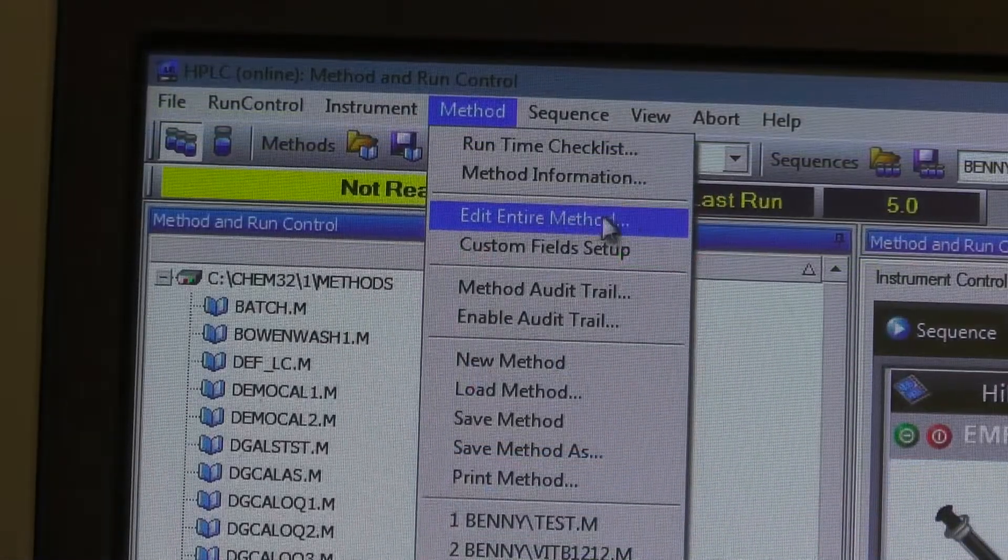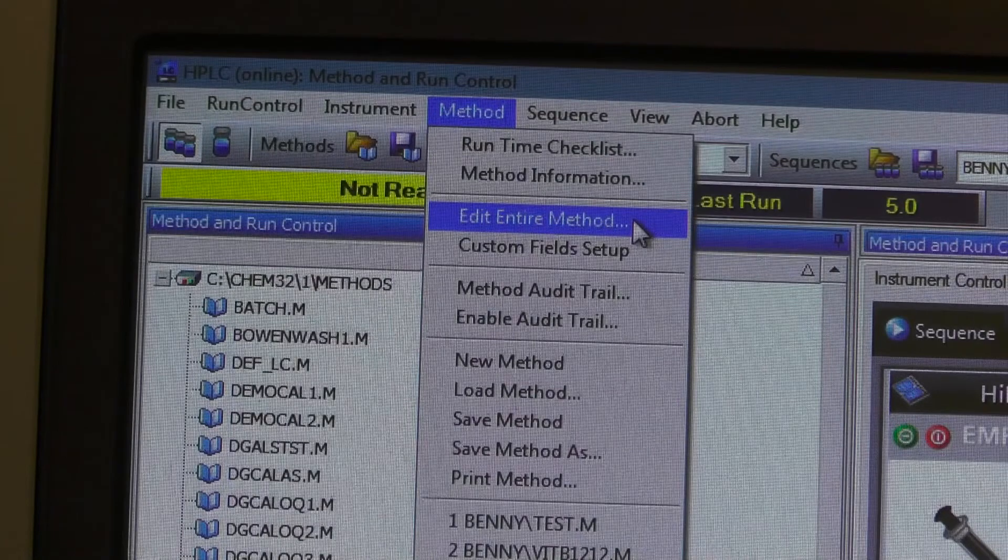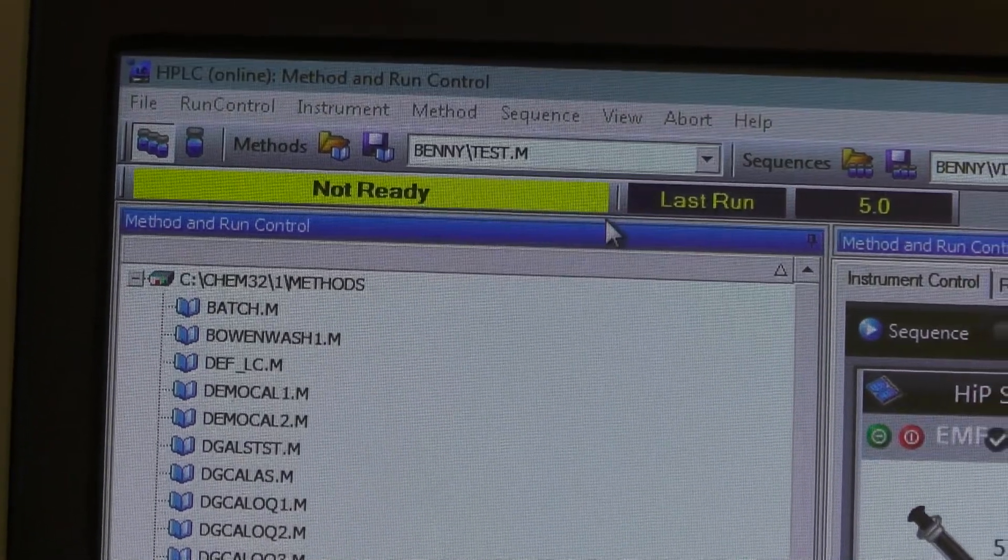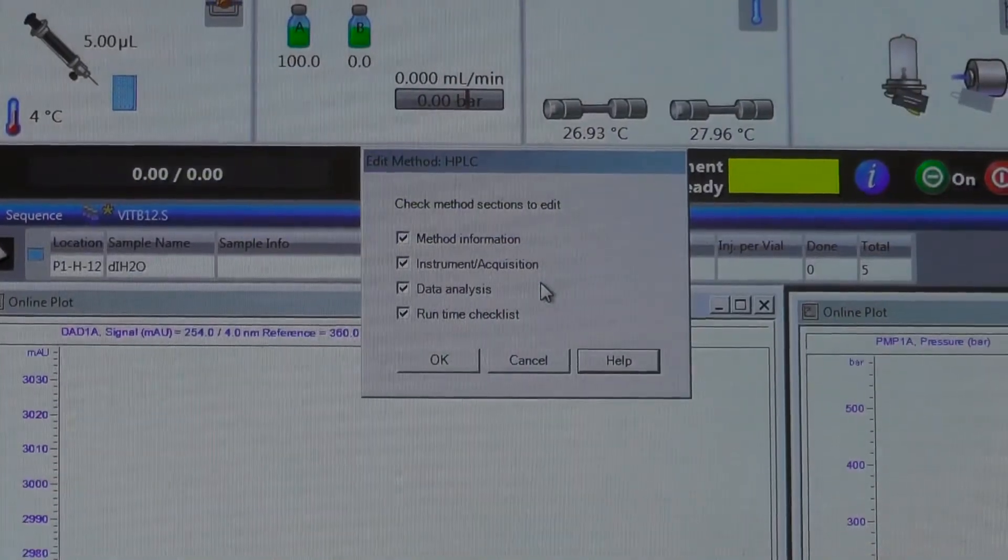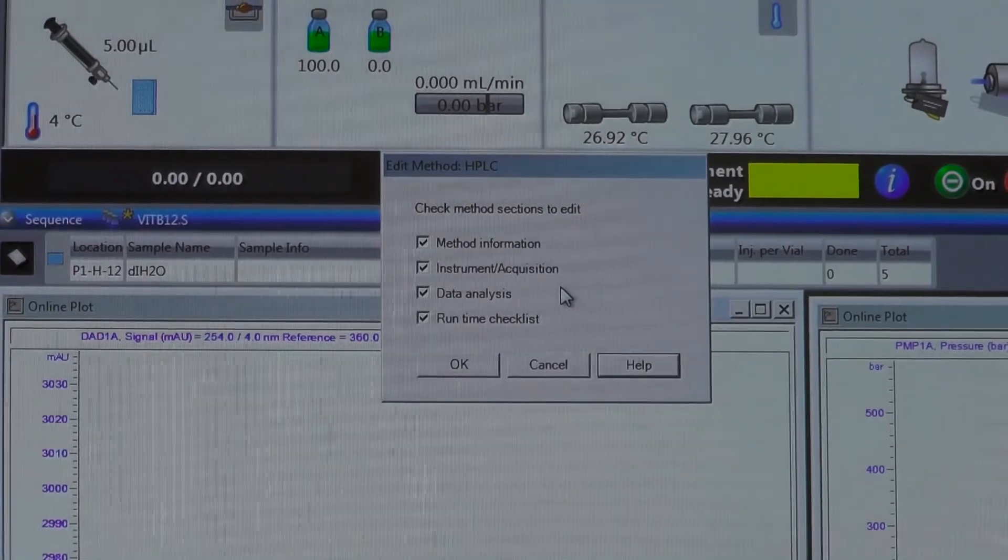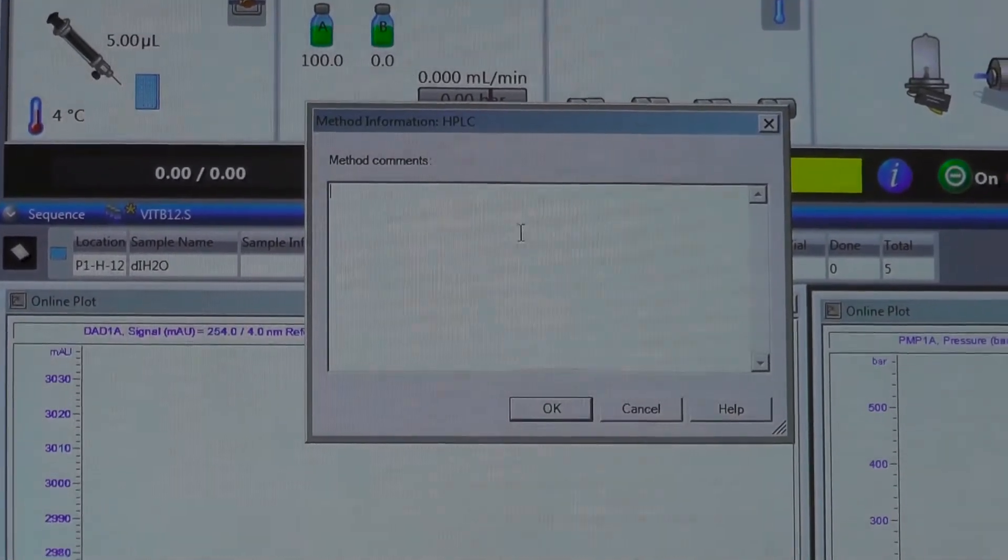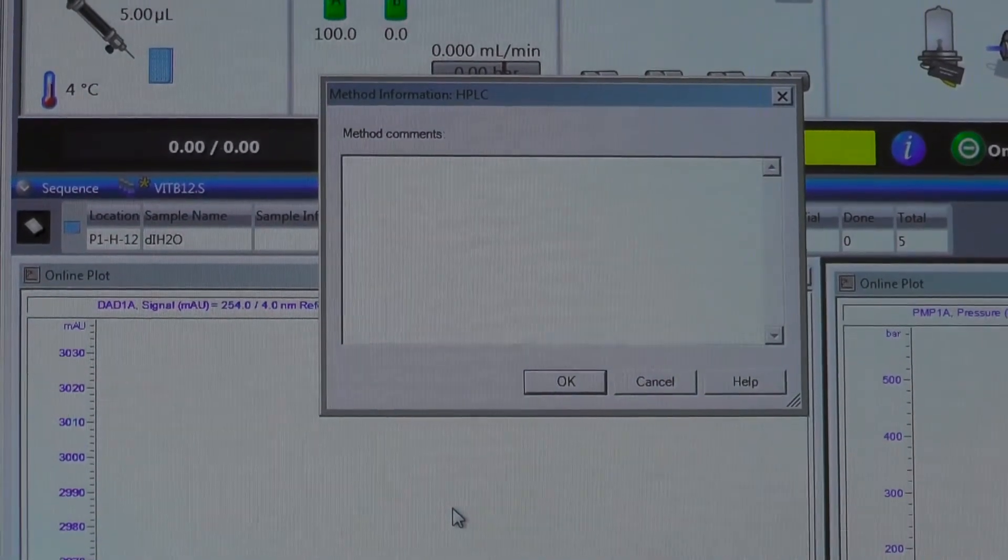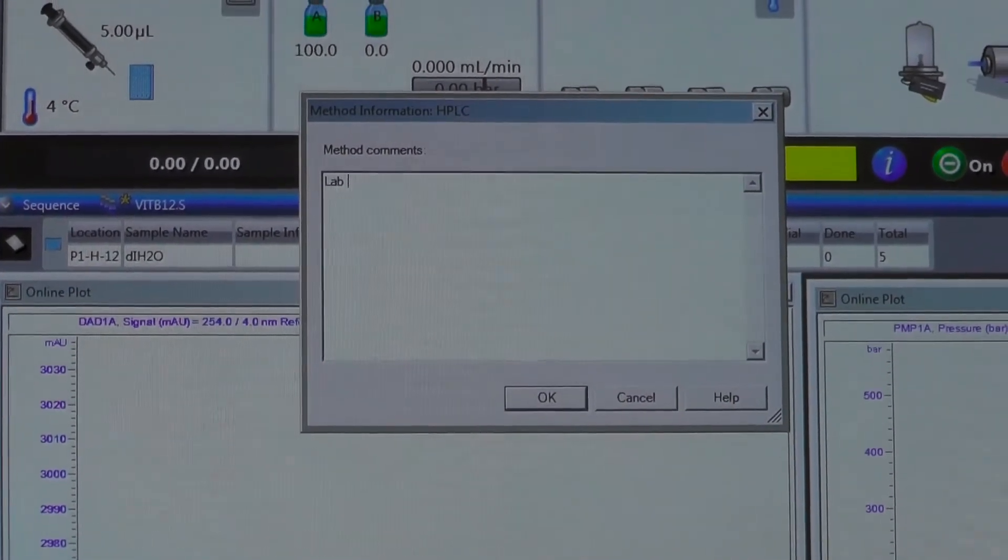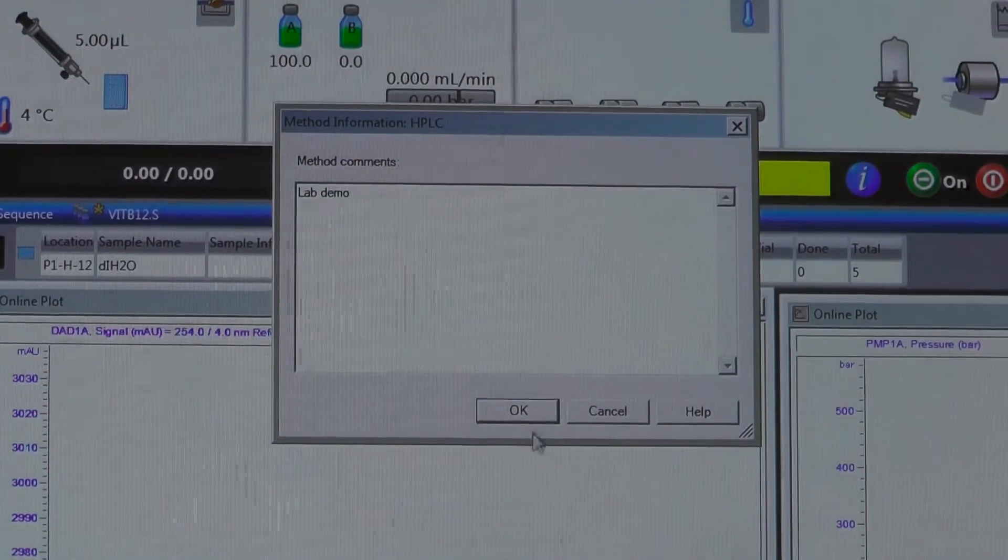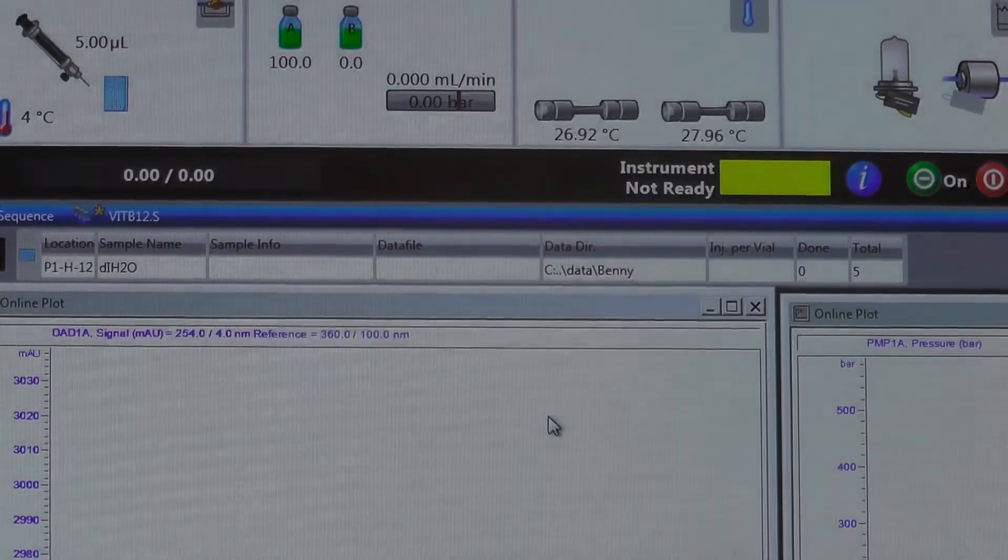To edit the method, click on the Edit Entire Method tab under the Method menu. Select all of the options on the checklist and write down details about your method in the comments. Here we only wrote down lab demo for demonstration purposes, but in an actual experiment, you should write down as much detail as possible. Click OK.